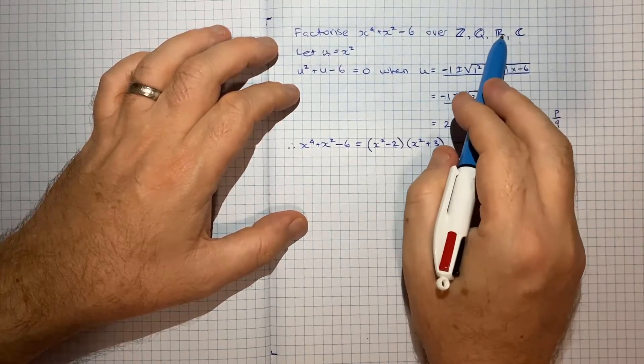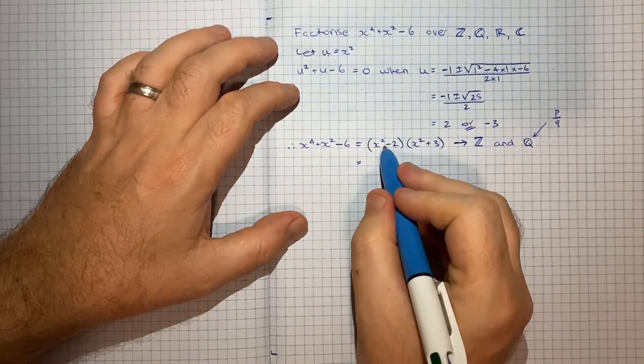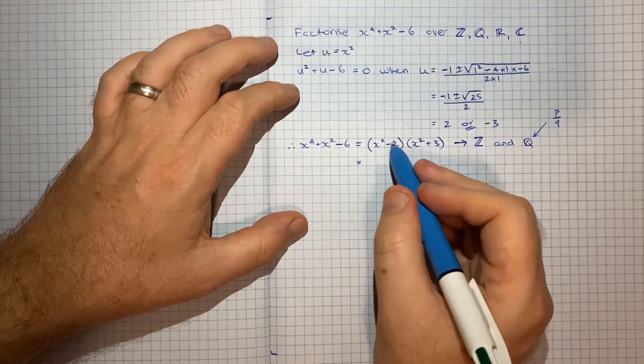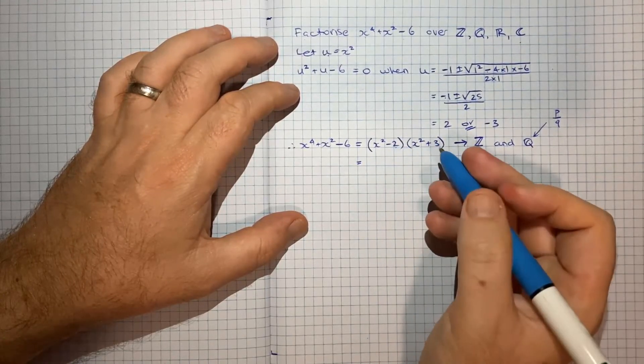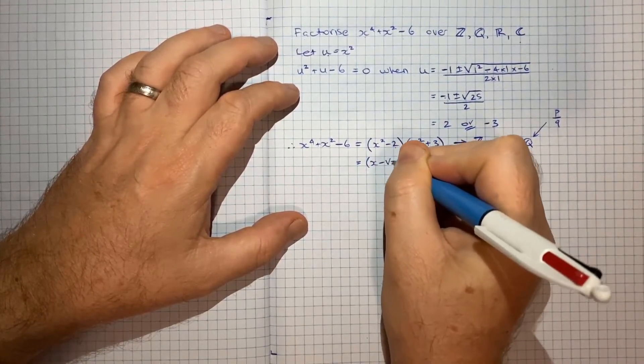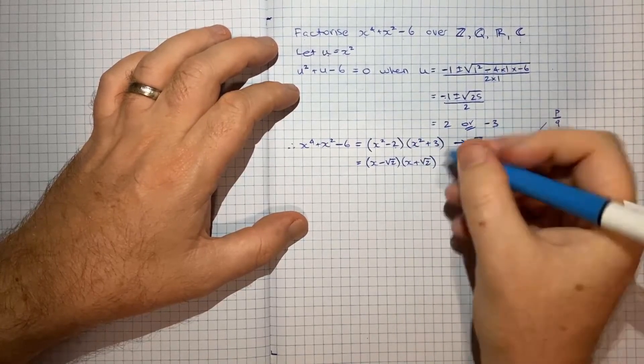Now, if we want to move on to other factorisations, if we think about x squared minus 2, that will be 0 when x squared is equal to 2, so x will be plus or minus root 2. So we can write this part as x minus root 2, x plus root 2, and then leave this part unchanged.